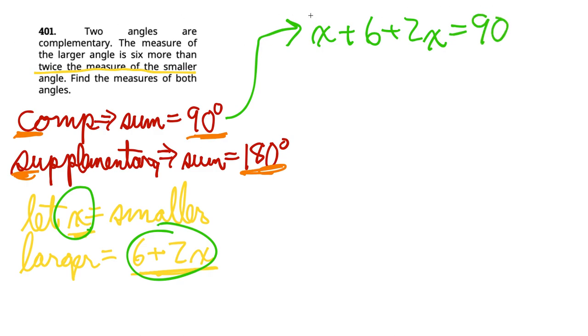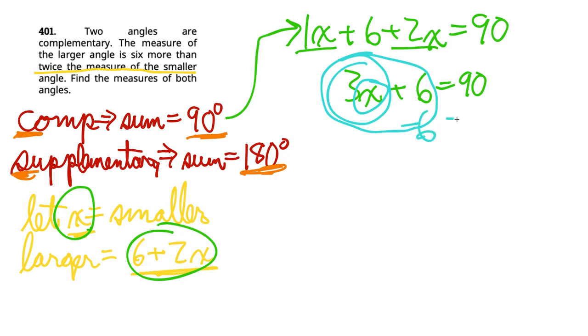We're going to collect like terms, and again, if a variable doesn't have a number in front of it, we assume it's a one. So 1X plus 2X, that'll be 3X. And then the six just drops down. And then we want to solve for X, it's the bullseye method working from the outside to the in. So when we get rid of positive six, we're going to subtract six from both sides. So we're left with 3X on the left-hand side, and 90 minus 6 is 84. Then the next thing we want to do is divide both sides by 3.